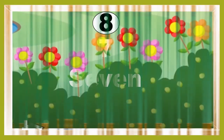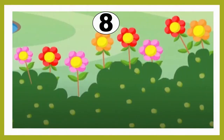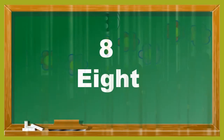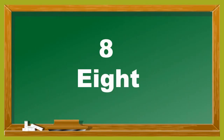Can you see the beautiful flowers on the bushes? There are 1, 2, 3, 4, 5, 6, 7, 8 — 8 flowers. E, I, G, H, T — 8.